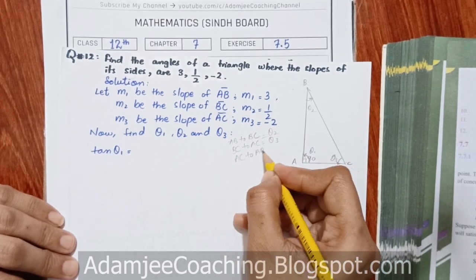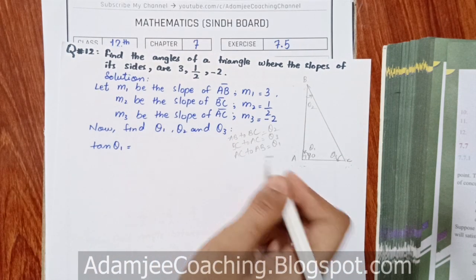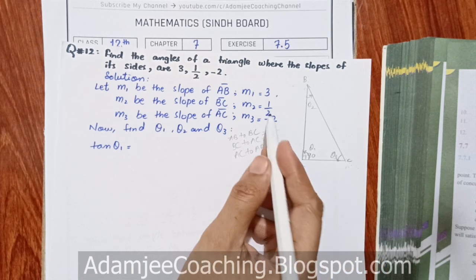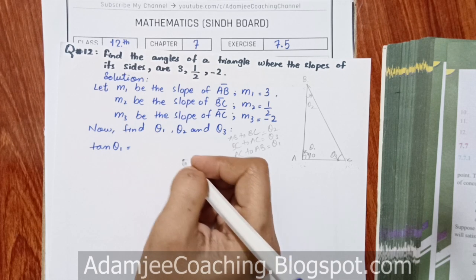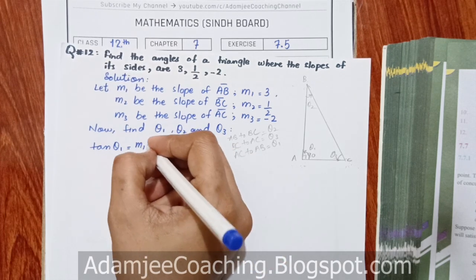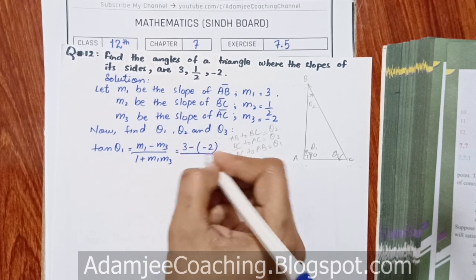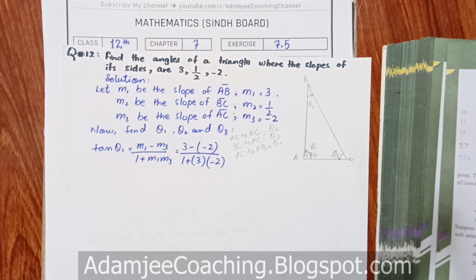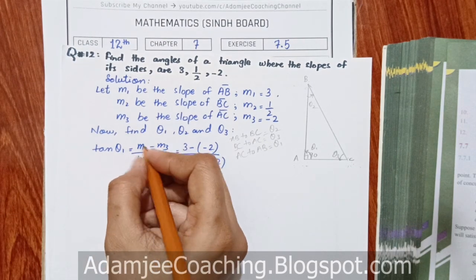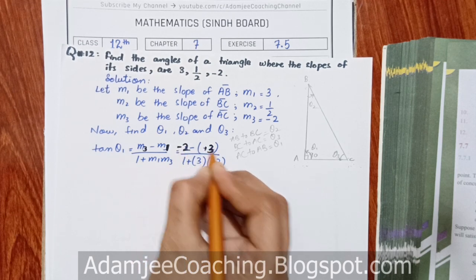For Theta1, we consider the angle at vertex A between AC and AB. AB has slope M1 and AC has slope M3. So we can write: tan(Theta1) = (M1 − M3) / (1 + M1·M3) = (3 − (−2)) / (1 + 3·(−2)).